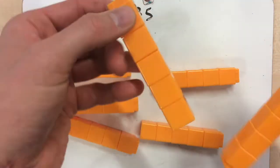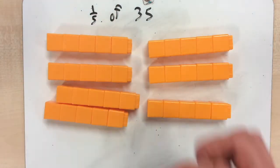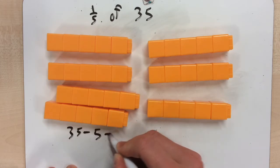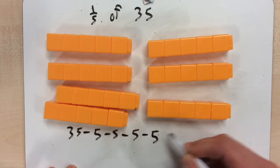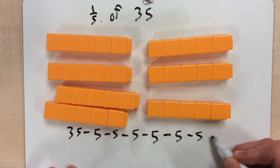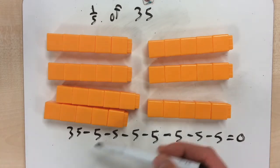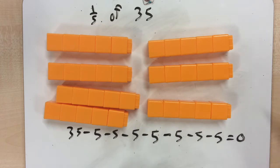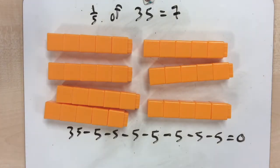A sixth and a seventh 5. So if I want to write that: 35 take away 5, take away 5, take away 5, take away 5, take away 5, take away 5, take away 5, take away 5 equals 0. I've taken away 7 fives, so 1/5 of 35 equals 7.